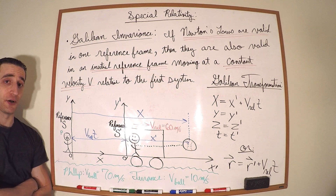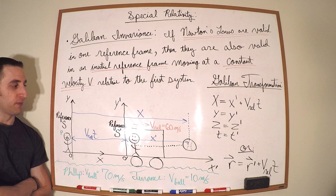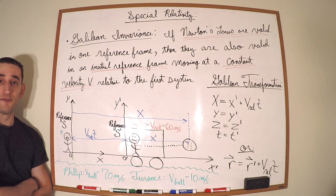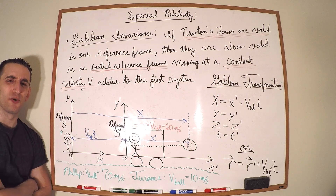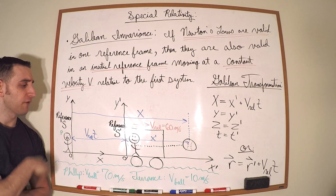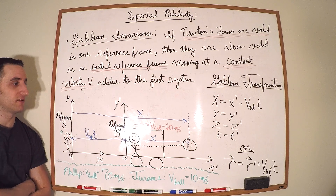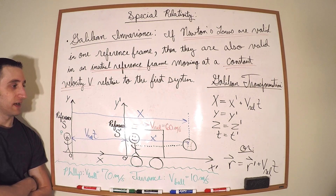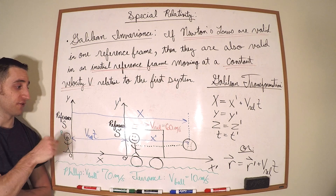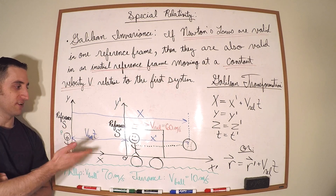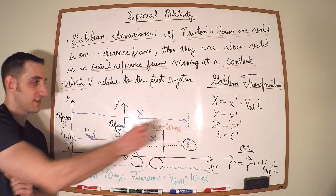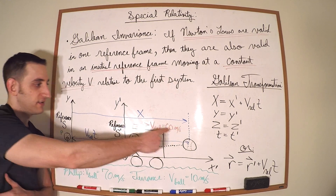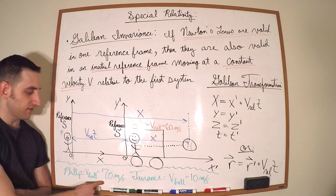Philip says he measured a different speed. Has the universe played a trick on Terrence and Philip? Well, this seems a bit silly, because we know we just take the velocity of the car and add the velocity of the throw — 60 plus 10 gives us 70.